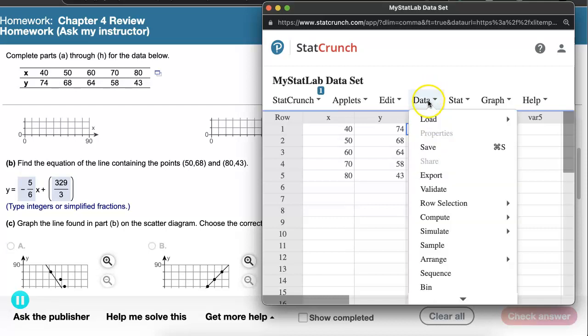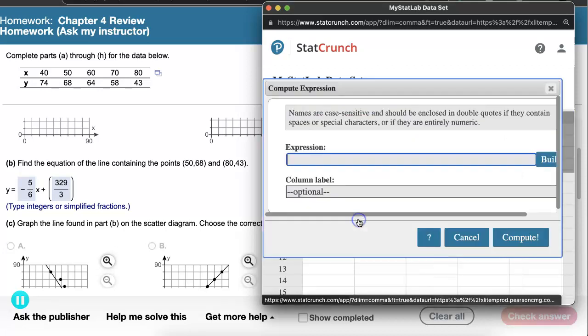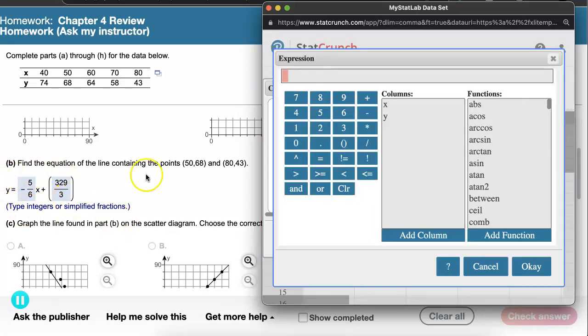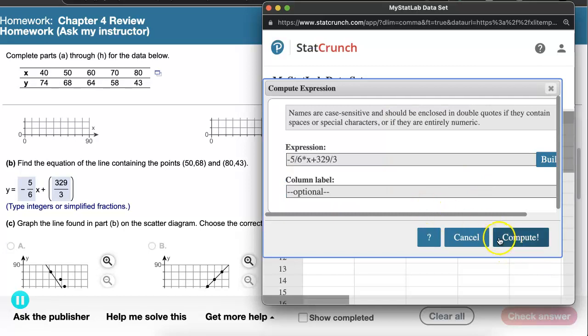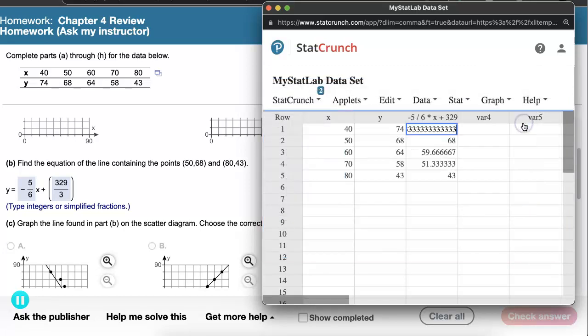I'm here in the third column. I'm going to go to Data, Compute, Expression. And the first thing I want to do is calculate what the line predicts each data point should be. So to do this, let's build an expression that is this equation here. So we'll do, let's see here, negative five, six times x, I just double click that x to add it, plus 329 divided by 3. And we will compute.